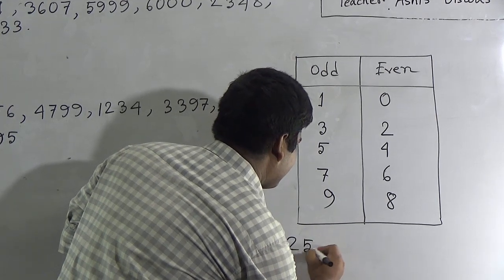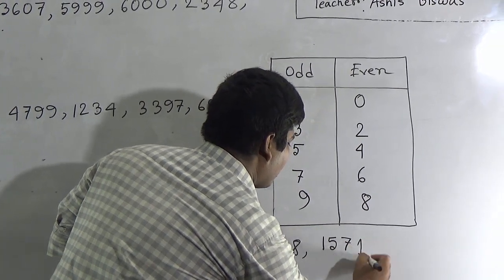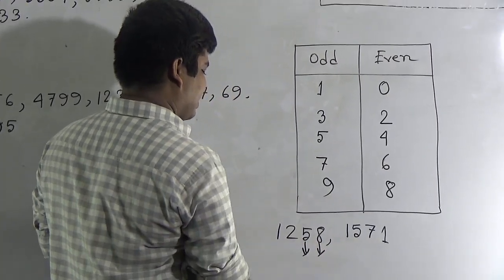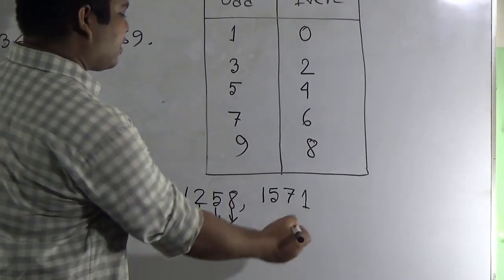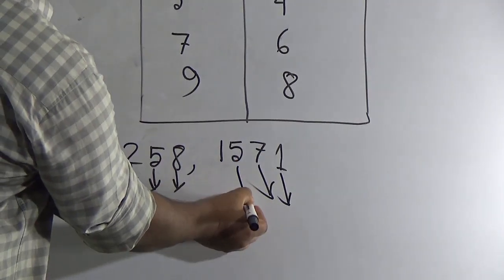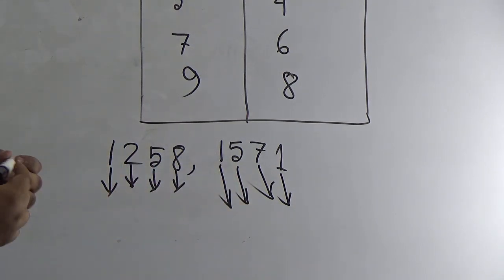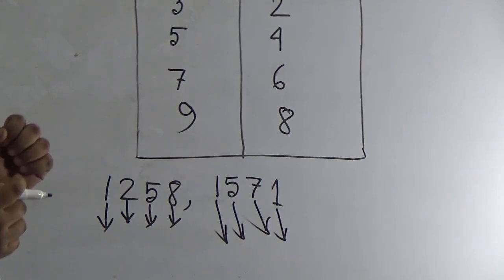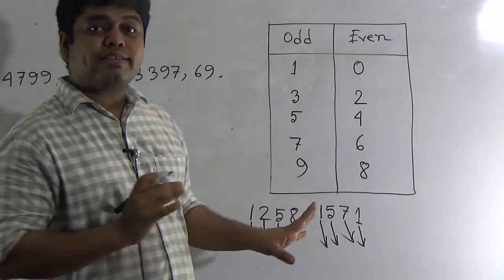Now we write two numbers: one thousand two hundred fifty-eight and one thousand five hundred seventy-one. Notice: eight is in the ones place, five is in the tens place, two is in the hundreds place, and one is in the thousands place. For the second number, one is in the ones place, seven is in the tens place, five is in the hundreds place, and one is in the thousands place. If we want to know which number is even and which number is odd, we must check the digit in the ones place — that means the last digit of a number.